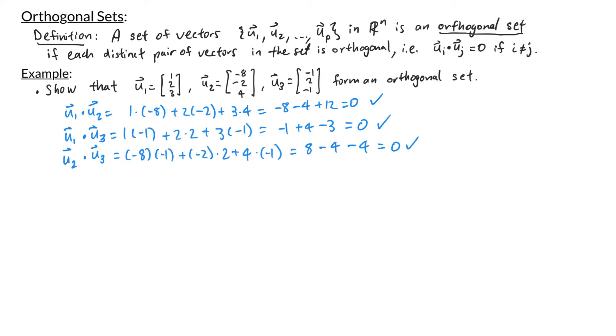We see that each distinct pair of these vectors is orthogonal, so that confirms that the set {u1, u2, u3} is an orthogonal set.